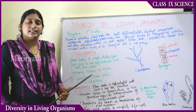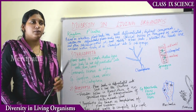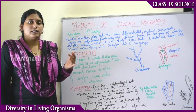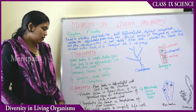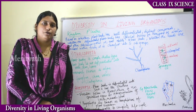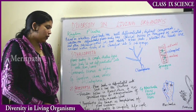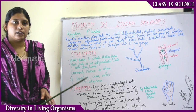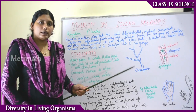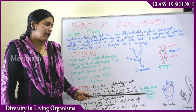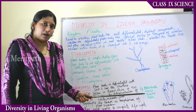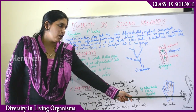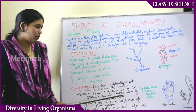Bryophytes are known as the amphibians of the plant kingdom. Just as amphibians like frogs need water, bryophytes cannot complete their life cycle without water — that is why they are known as amphibians of the plant kingdom. Examples are Marchantia, ferns, mosses, and other forest plants.